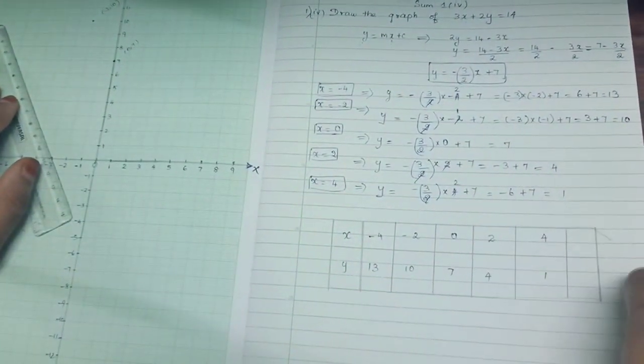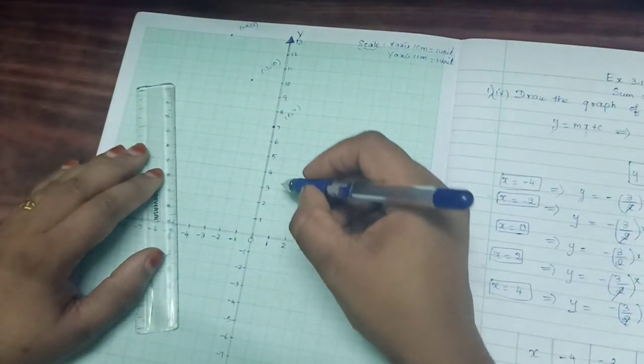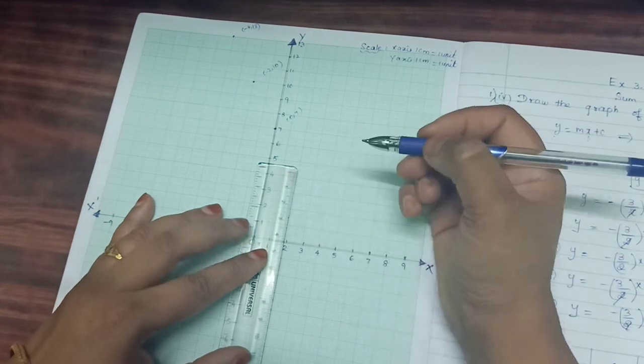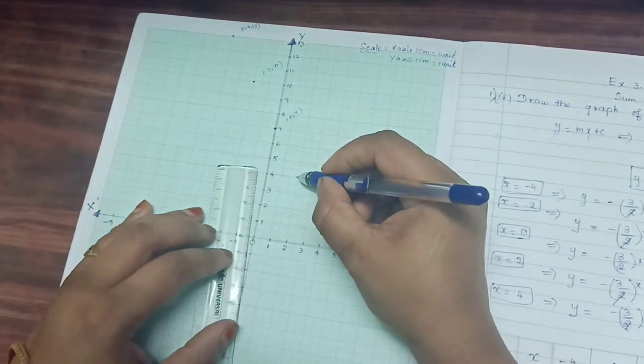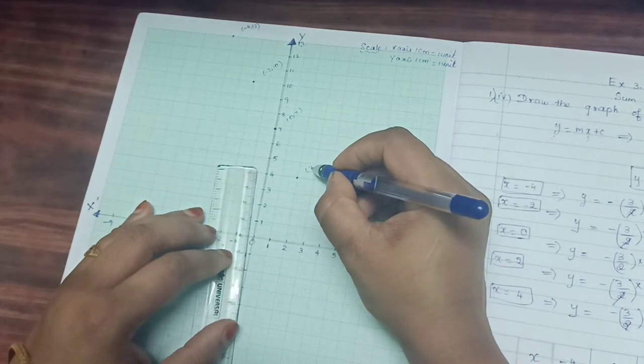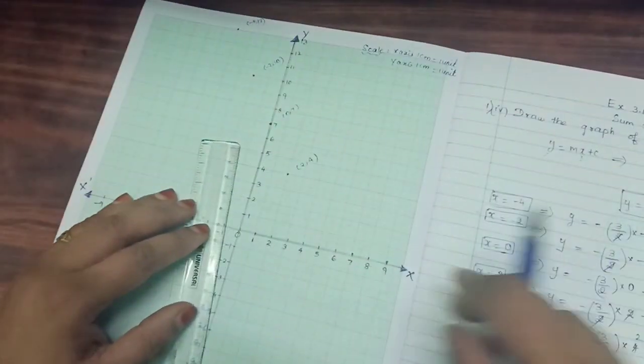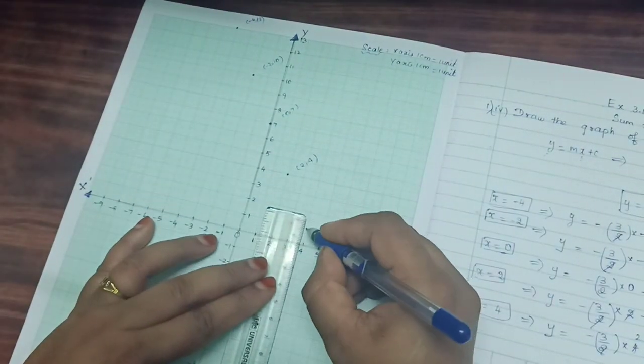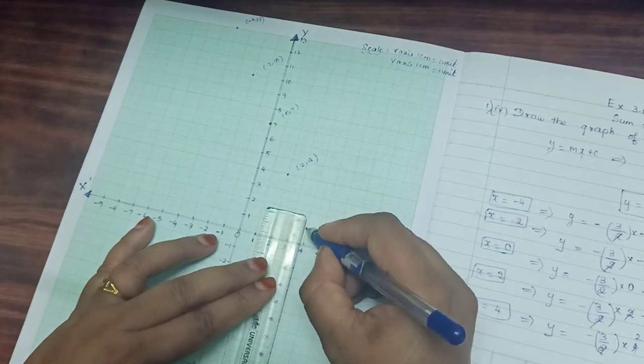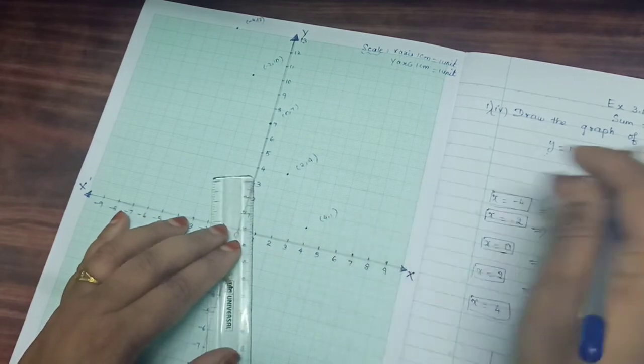Next, 2, 4. 2, 4 is here. So this is 2, 4. Next is 4, 1. 4 is here, 1 is here. So 4, 1.